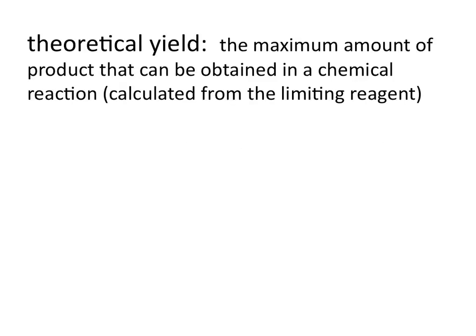The theoretical yield is the maximum amount of products that can be obtained in a chemical reaction, and we calculate this from the limiting reagent. So the theoretical yield is something that's almost never obtained. You would only obtain the theoretical yield under perfect conditions where no product was lost in the process.